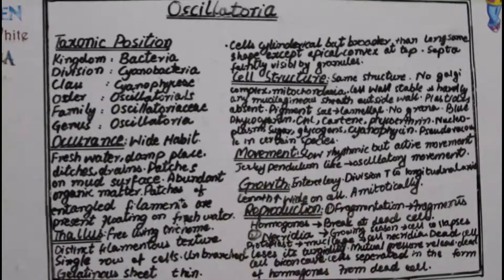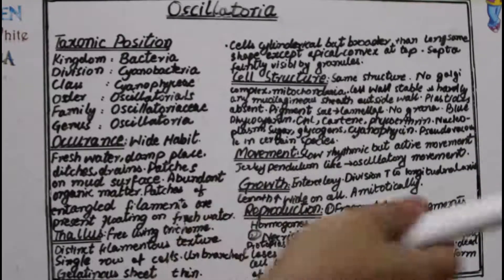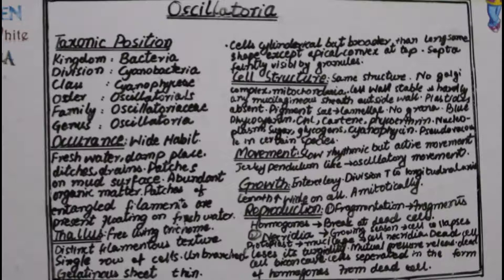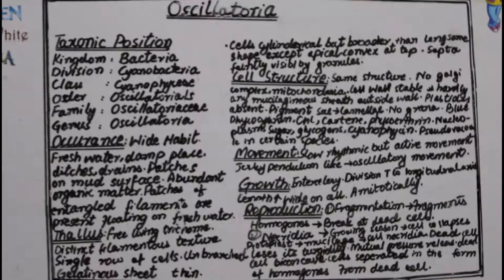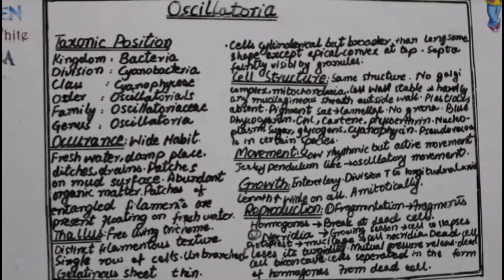All cells are the same in structure and shape within the filament. Complex organelles like mitochondria and endoplasmic reticulum are absent, as Oscillatoria is a prokaryote. A mucilaginous sheath is present, and in a few cases it extends outside the cell wall. A hard cell wall is present, giving the cells their shape.